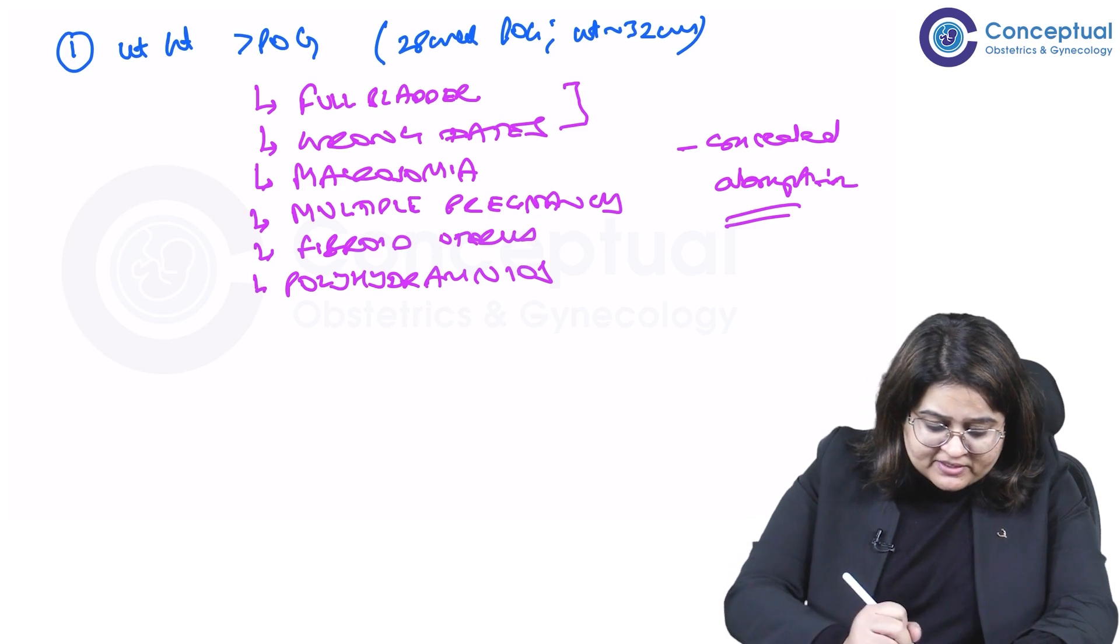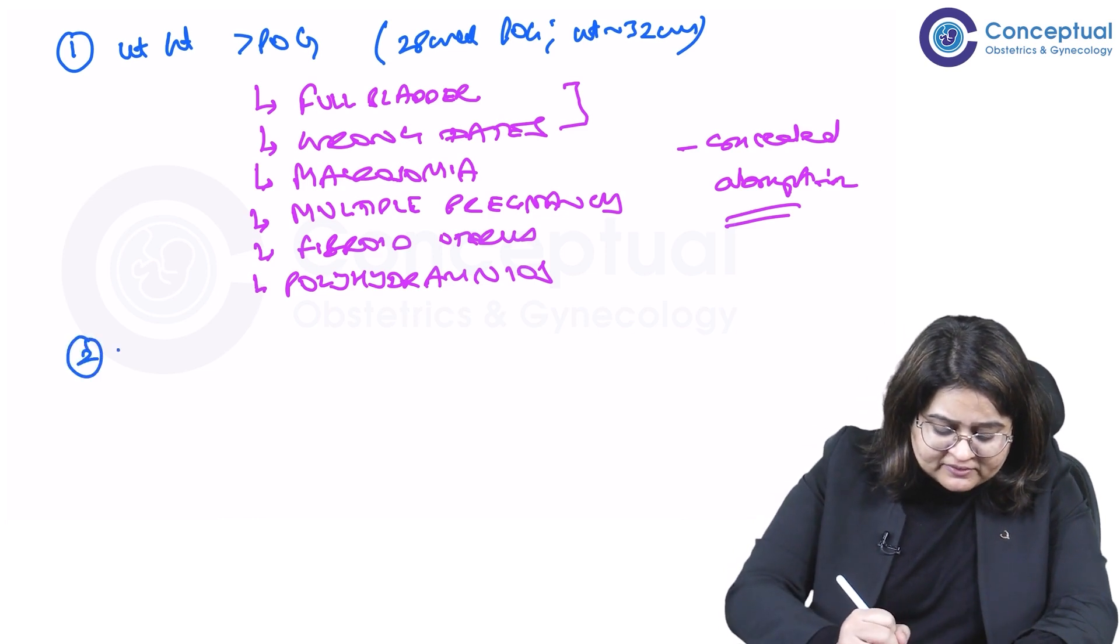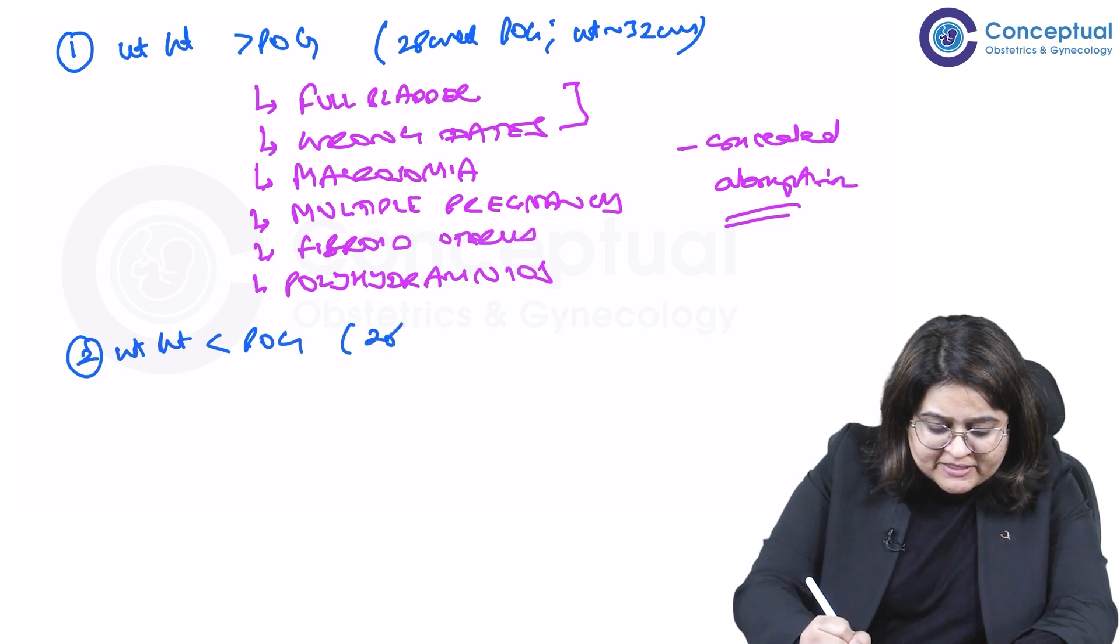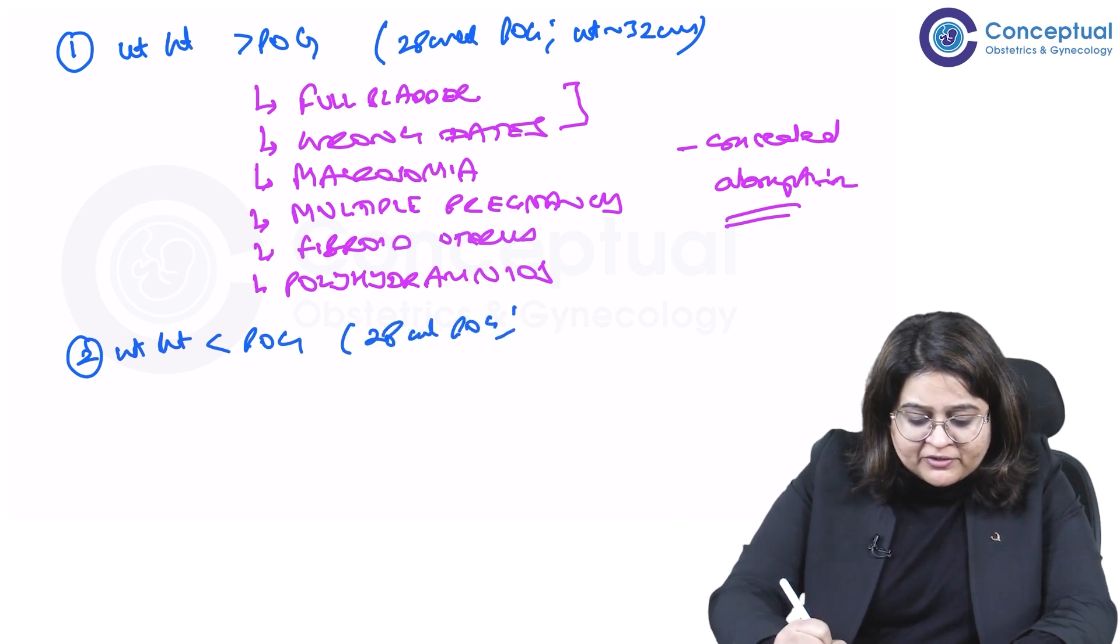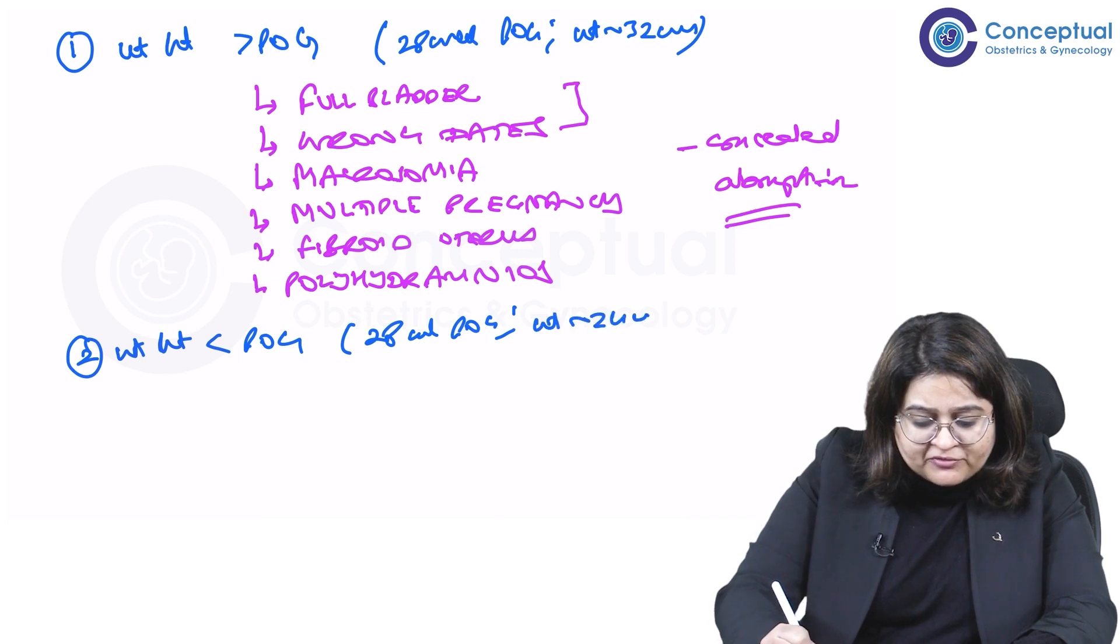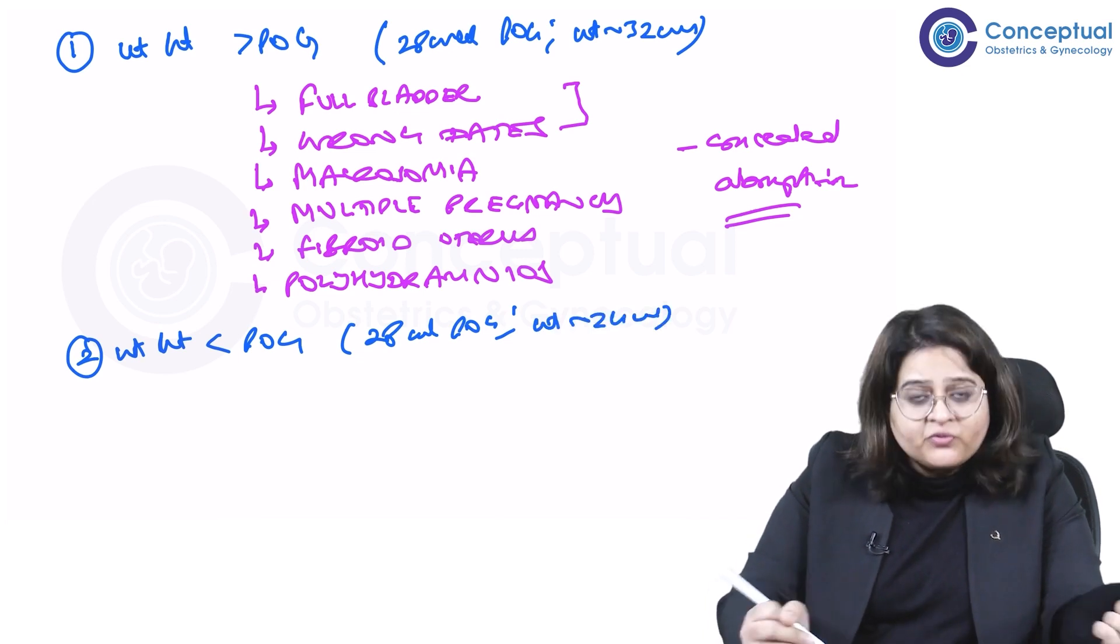The second scenario is that the uterine height is less than the POG. So same patient when she's 28 weeks POG, but when you examine her, you find the uterus is 24 weeks. So what are the things you're going to think of? The first thing again is you recheck your dates.